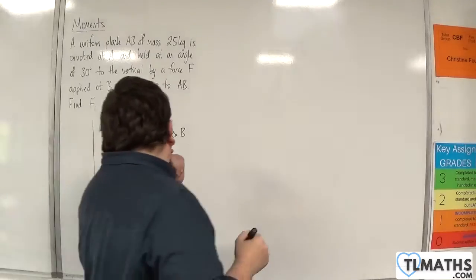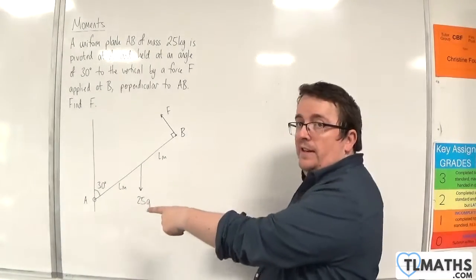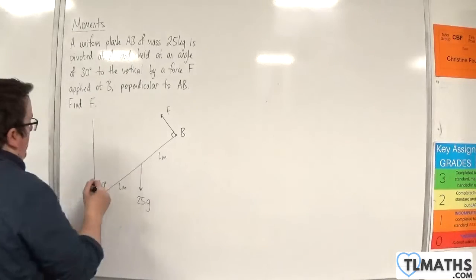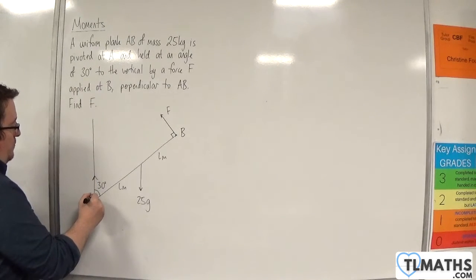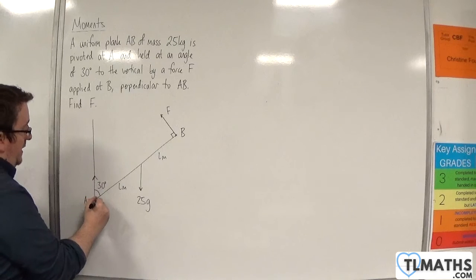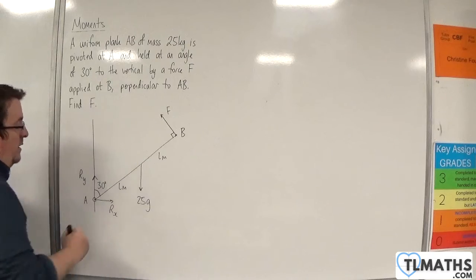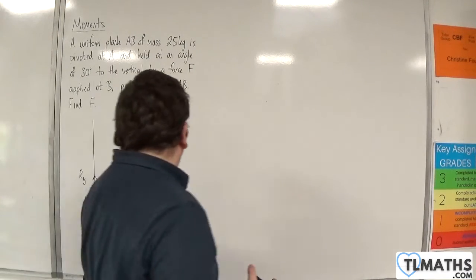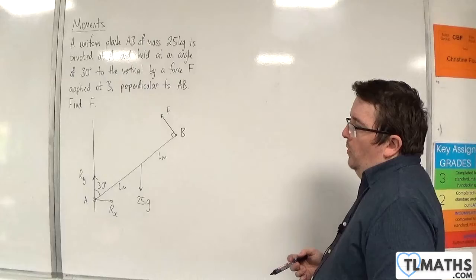Okay, now because the plank is pivoted at A, we need to think about a normal reaction force working, well its components, one working vertically and one horizontally. So we'll call this RY and this RX. Okay, so this is the diagram that we're going to work with.